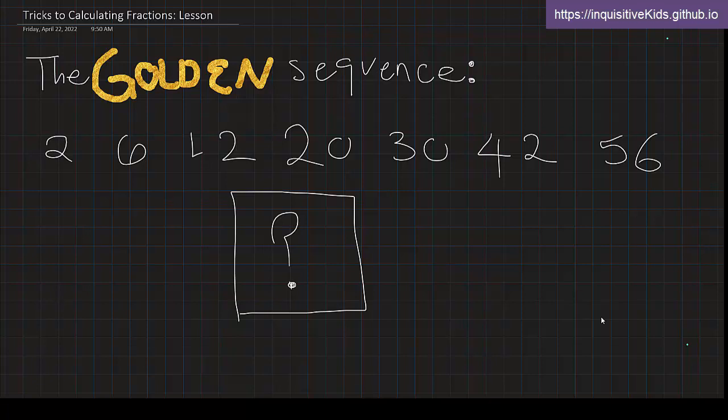This sequence is so important that it's going to come up in every single problem we're going to do today. This is called the golden sequence: 2, 6, 12, 20, 30, 42, and 56. Now, what's the pattern in here? What's so special about this? What's going to be the next number?